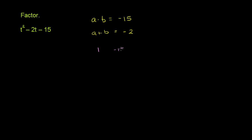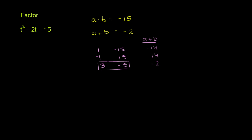So you have 1 and negative 15 — their product is negative 15, and their sum is negative 14. And if you did negative 1 and 15, you're just going to get the negative of that: 14. That does not equal negative 2. What happens if you take 3 and negative 5? Their product is definitely negative 15, and 3 plus negative 5 is negative 2. So that works. 3 times negative 5 is negative 15, and 3 plus negative 5 is negative 2.